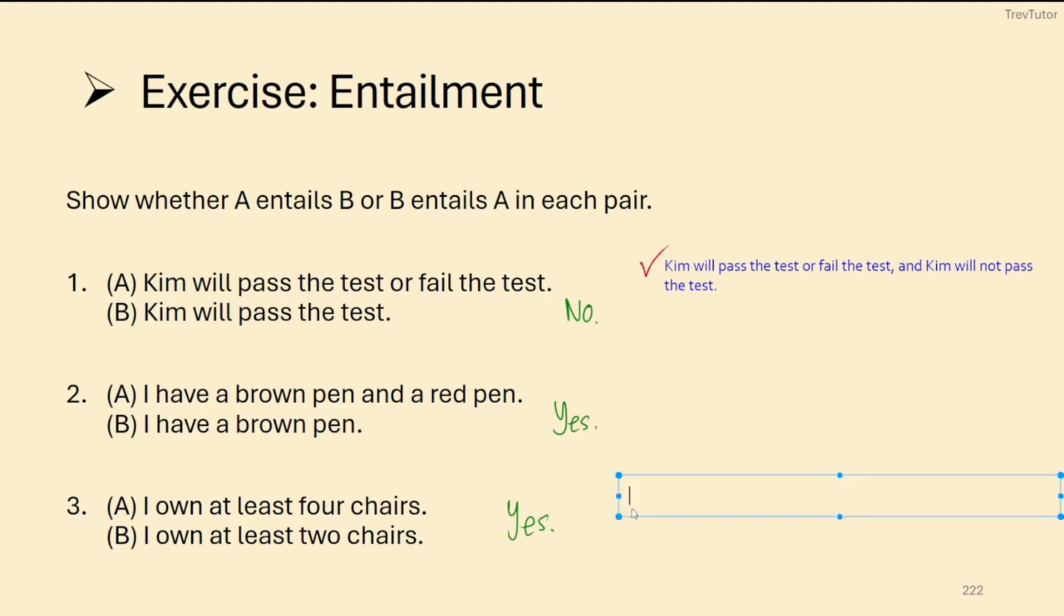But if we do the test for our bottom one here, so I own at least four chairs, but I do not own at least two chairs. Now this is very clearly a contradiction if we take the negative version of B, because if they own at least four, then how do they not own at least two?